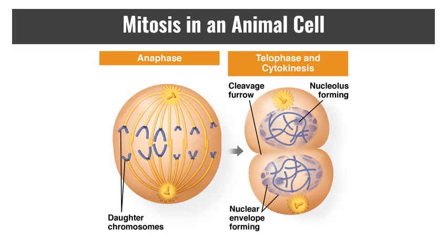Telophase is essentially the reverse of prophase: the nucleolus comes back, chromosomes decondense, and the spindle breaks down. Cytokinesis then divides the cytoplasm and all of the other organelles. It looks different in plant versus animal cells, but cytokinesis is the division of the cytoplasm and is not technically part of mitosis, even though it is part of the non-interphase component of division.